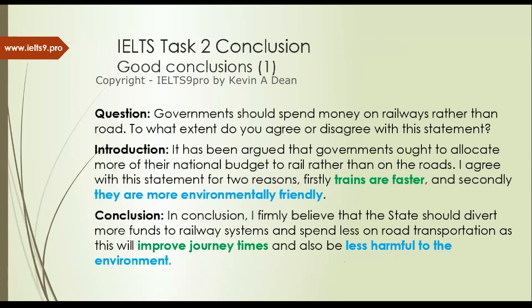Let's look at some examples — first, some which are good, then some which are terrible. You've probably seen this question — it's a pretty common one about whether government should spend on railways or roads. So: 'It has been argued... I agree because trains are faster and they're more environmentally friendly.' You can see the paraphrase in green and blue. 'Trains are faster' becomes 'improved journey times.' 'More environmentally friendly' becomes 'less harmful to the environment.' Easy — nice and simple.